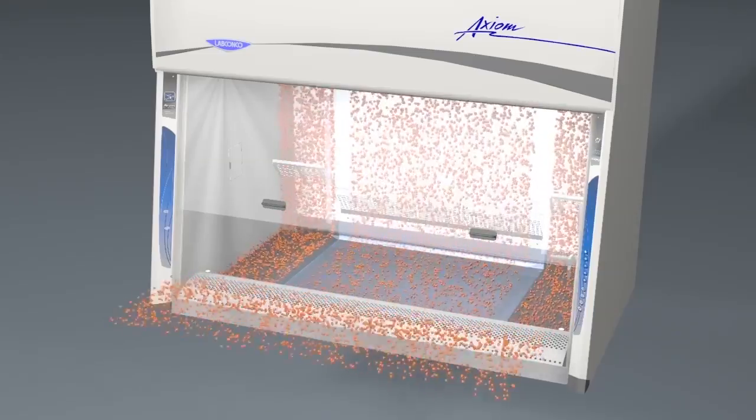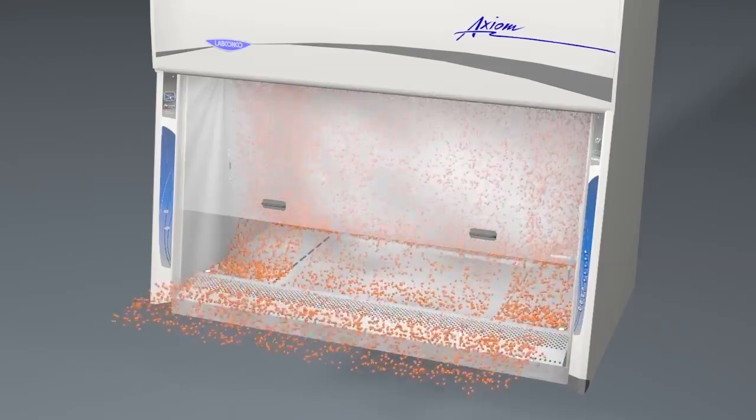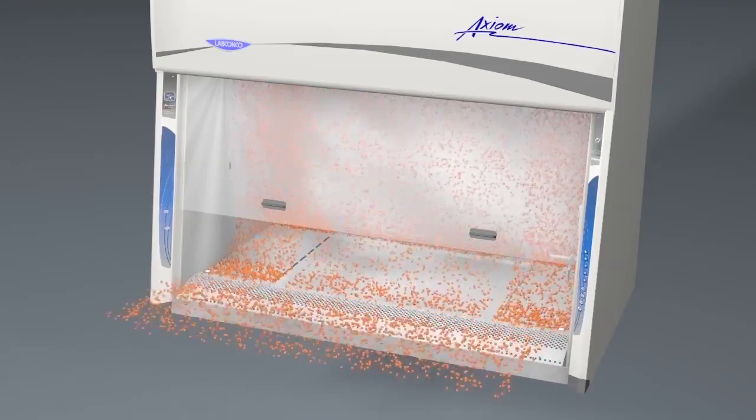This air mixes with downflow air at the wings of the cabinet and is drawn into the cabinet's air supply and pushed back down through the supply HEPA filter.